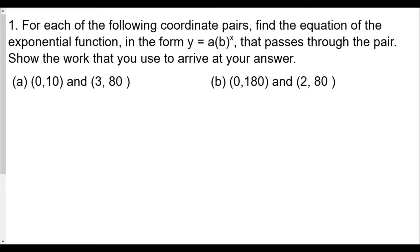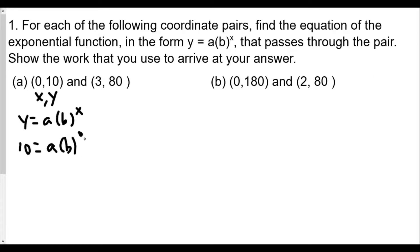We begin with part a. Our first point is (0, 10), where x = 0 and y = 10. Plugging into y = a · b^x, we get 10 = a · b^0. Since any number to the zero power equals one, this gives us 10 = a · 1, so a = 10. This is very helpful for solving the next equation.